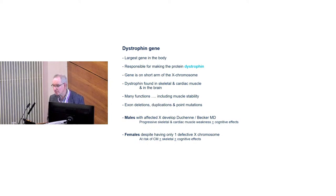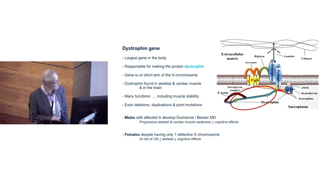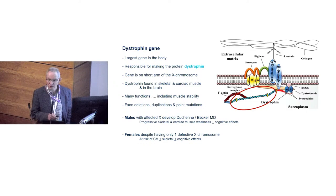The protein dystrophin has many functions, but it's probably easiest to think about it as a protein that links mechanical forces between cardiac cells, from the cardiac point of view, or skeletal muscle — linking the inside of the cell, the contractile elements, with the outside surrounding structures. Males who are deficient in dystrophin develop Duchenne muscular dystrophy.